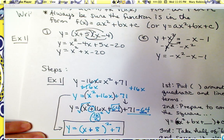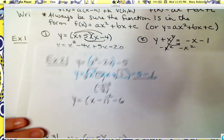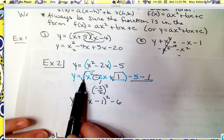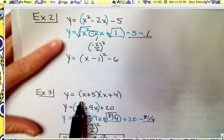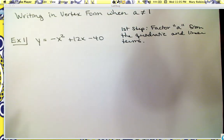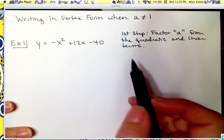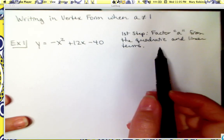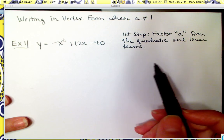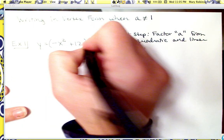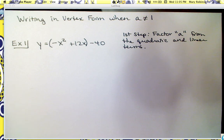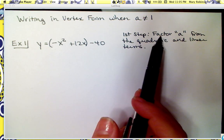There was a positive 1 as the leading coefficient in each example. This will help you understand what to do when a is not equal to positive 1. So to get started, the very first step is to factor a from the quadratic and linear terms. In previous problems, we put parentheses around those terms and we want to actually factor out our a.